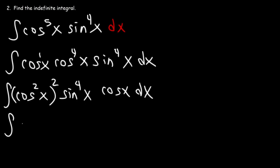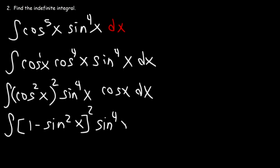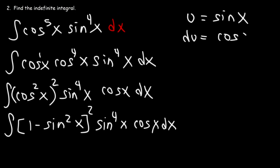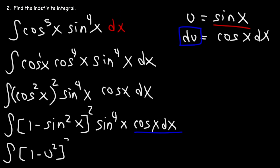Using the Pythagorean identity, cosine squared equals 1 minus sine squared. This converts all cosine terms to sine terms except one. Now we use u substitution: let u equal sine x, so du equals cosine x dx. We replace cosine x dx with du and all sine terms with u, giving us the integral of (1 minus u squared) squared times u to the fourth du.